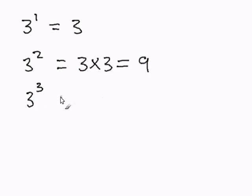3 to the third power. This means you multiply by itself 3 times so you get 3 times 3 times 3, and that gets you 27.